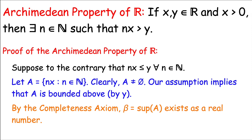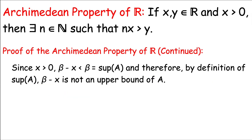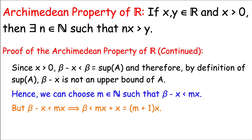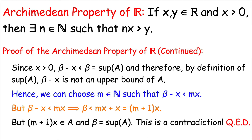Since A is a non-empty set of real numbers bounded above, the completeness axiom gives A a supremum — call it beta — that exists as a real number. Since x is positive, beta minus x is less than beta, so beta minus x is not an upper bound of A. Therefore some element of A, which is a natural number multiple of x, is bigger than beta minus x. Choosing m in the natural numbers with beta minus x less than m times x, adding x to both sides gives beta less than (m+1) times x. But (m+1)x is an element of A, contradicting beta being an upper bound of A. QED.